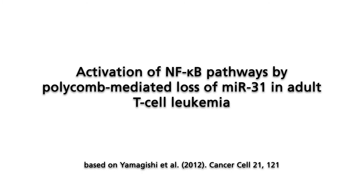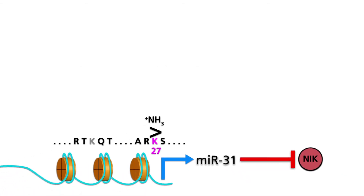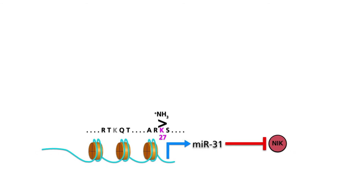MicroRNA31 can silence the MAP3K14 gene, which encodes the NIK kinase. In human adult T-cell leukemia, synthesis of microRNA31 can be inhibited by polycomb group proteins.